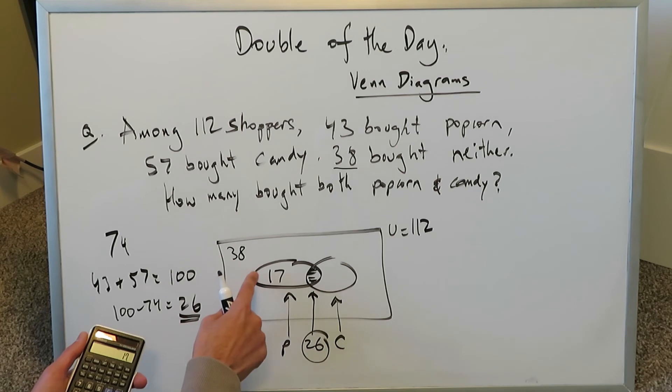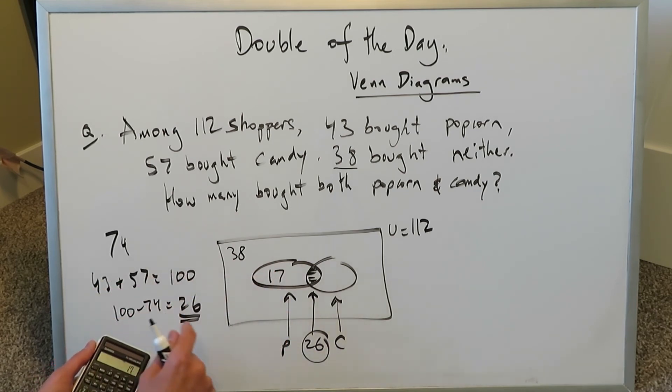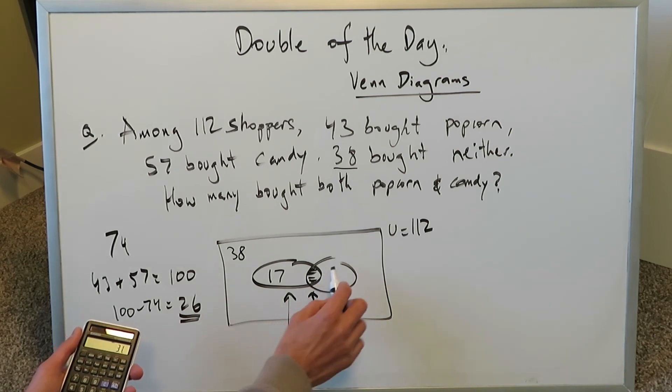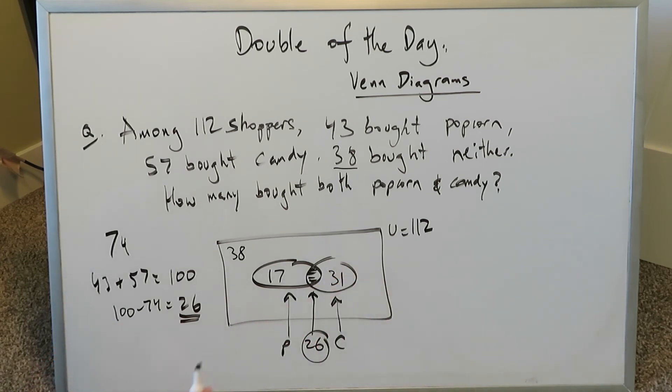Let's look here at this 57 candy. 57 bought candy minus this 26, which is your intersection point, gives you 31 over here. This 31 plus this 26 will give you that 57. This 17 plus this 26 will give you that 43.